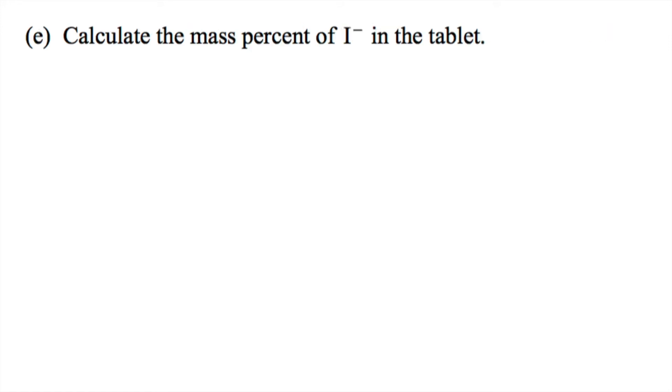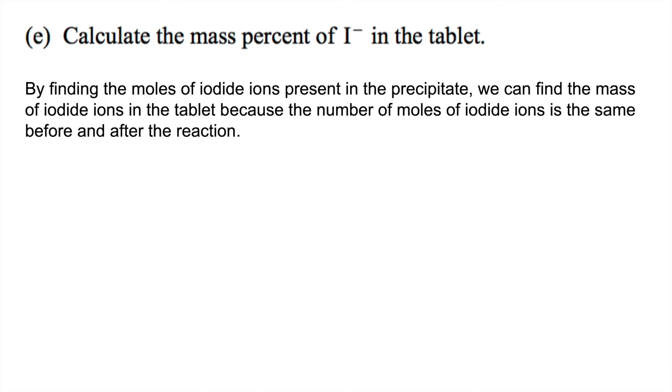Now part E says calculate the mass percent of iodide in the tablet. So because the number of moles of iodide ions is the same before and after the reaction, since all of the iodide is going to be precipitated, we can just look at the moles of iodide ions that are present in the precipitate, and that's going to be the exact same as the number of moles in the tablet. So the mass of the tablet is 0.425 grams. We're going to need to remember that.